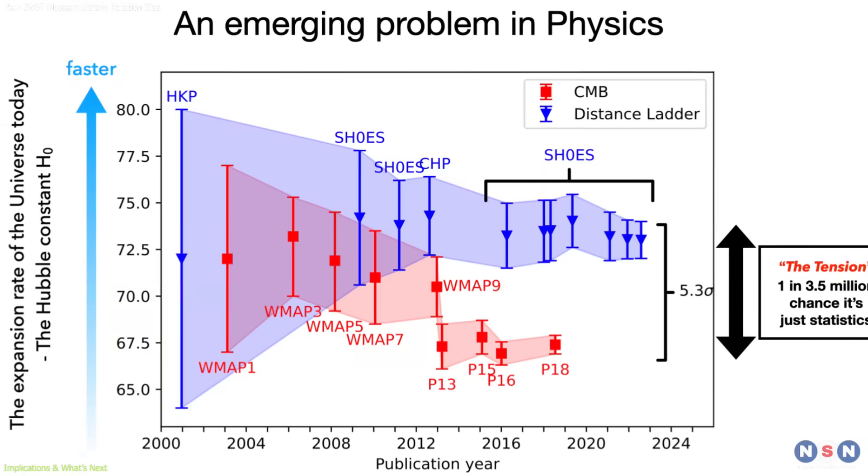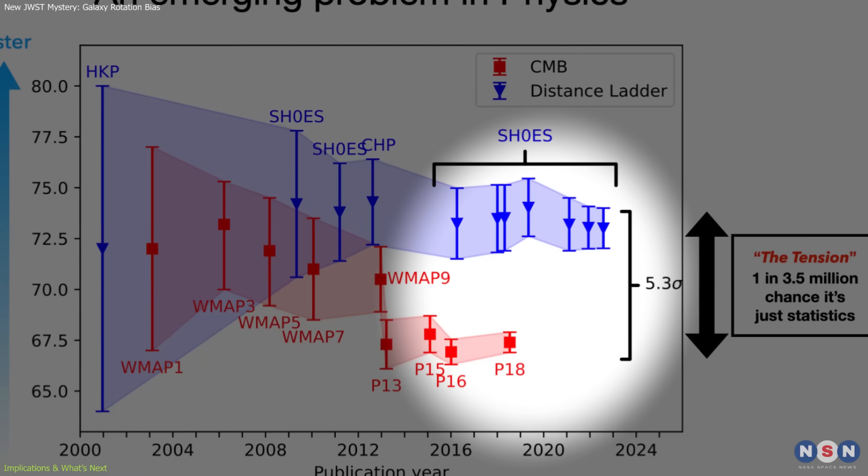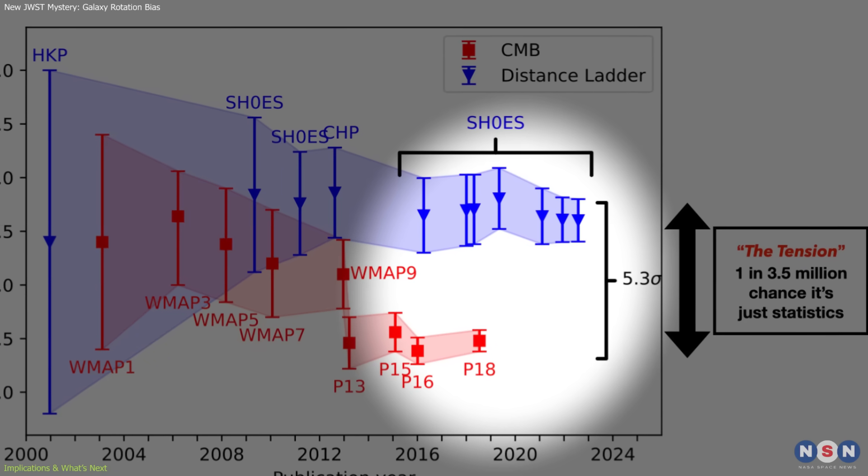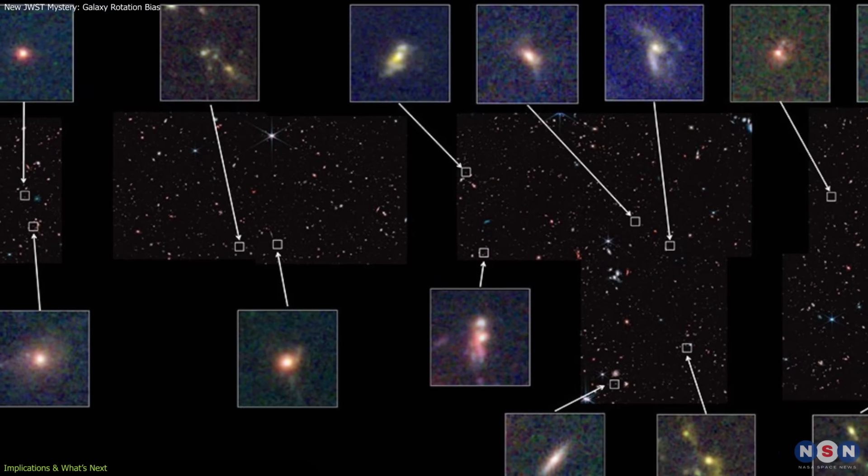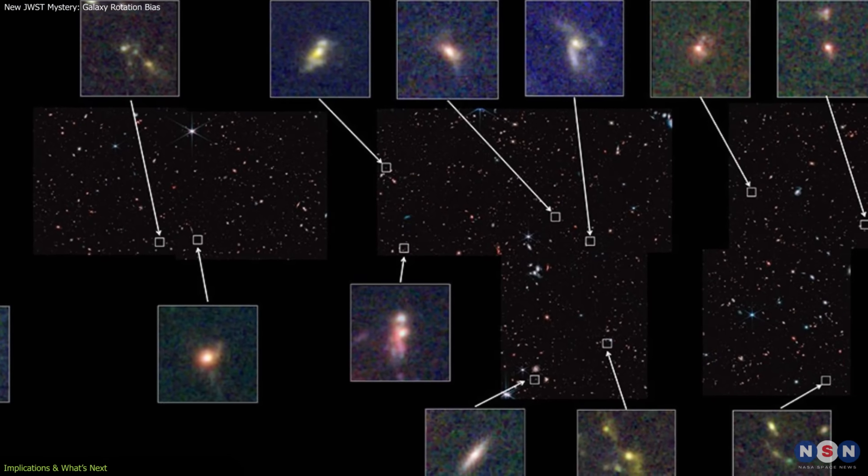This could help resolve puzzles like the Hubble tension, the disagreement between different measurements of the universe's expansion rate. It might also explain why some galaxies in the early universe appear larger and older than our models predict.